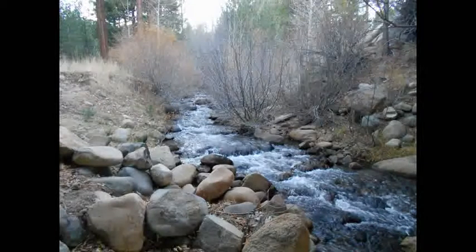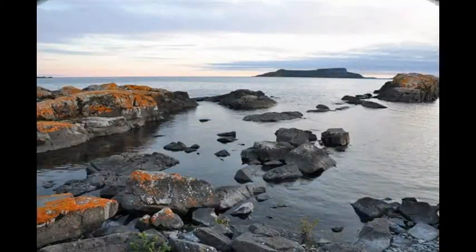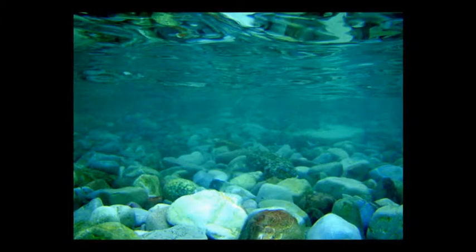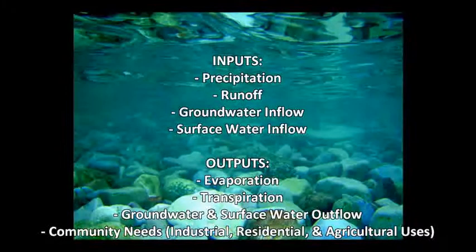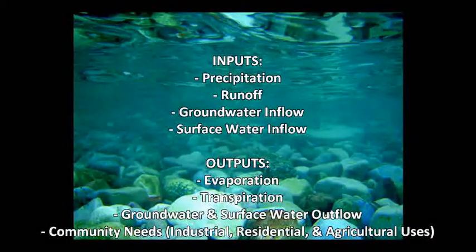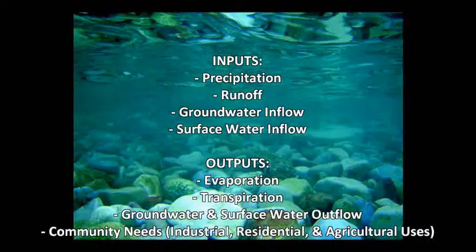The main components that are incorporated in creating a proper water budget for a local community are divided into two categories: inputs and outputs. Inputs include precipitation, which can come in solid or liquid form as rain or snow; runoff, which occurs once the soil type is fully saturated; groundwater inflow; and surface water inflow.